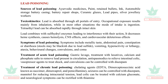Lead poisoning sources include Ayurvedic plants, paint, bullets, ink, automobiles, battery casings, battery repair shops, lead pipes, and silver jewelry workers. Lead can be absorbed through all portals; it combines with sulfhydryl enzymes and causes CNS and cardiovascular toxicity. Symptoms include metallic taste, abdominal pain, constipation, diarrhea, behavioral changes, convulsions, and coma. Treatment of acute lead poisoning includes gastric lavage, laxatives, calcium and phosphate salts, and vasopressors for shock. Convulsions can be controlled with diazepam. Chronic lead poisoning is treated with chelating agents such as EDTA. Mannitol reduces intracranial tension and thiamine can rectify neurological symptoms.